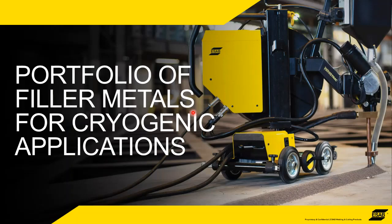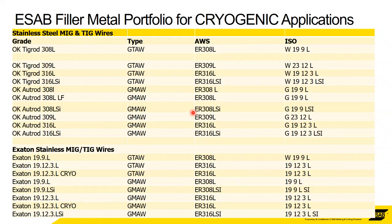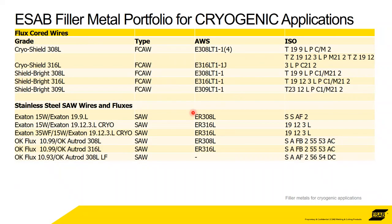To finish off, we have a full portfolio of all these grades. We've got MIG, TIG, submerged arc, and flux-cored for everything — every welding option — and all of these are being used for cryogenic applications somewhere.